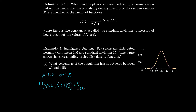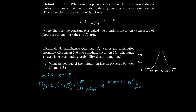We want the probability that capital X is between 85 and 115, which is the integral from 85 to 115 of (1/(15·sqrt(2π)))·e^(−(x−100)²/(2·15²)) dx. Recall that e^(−x²) has no elementary antiderivative — we can't integrate it with any technique we've covered so far. So we'll need a calculator to approximate this integral.